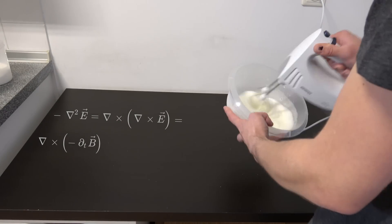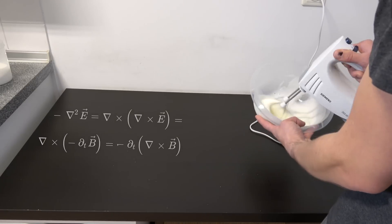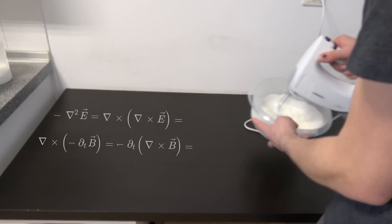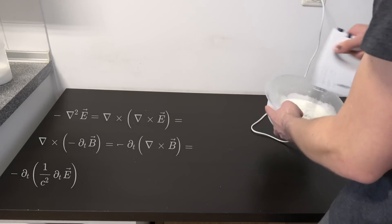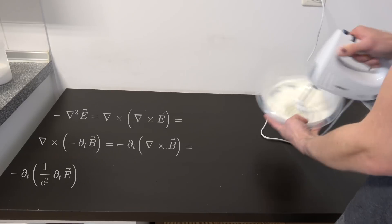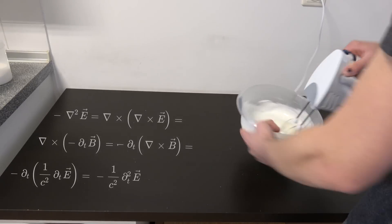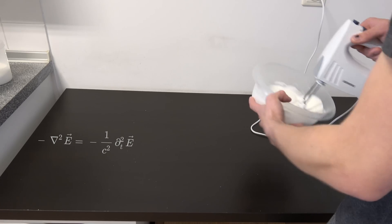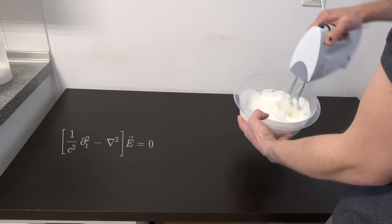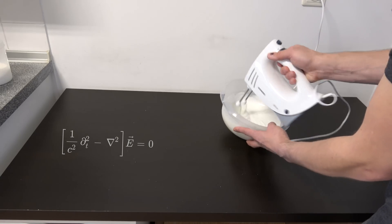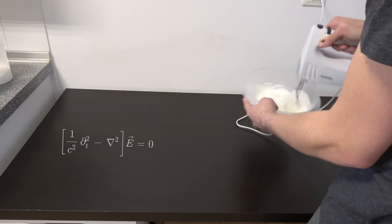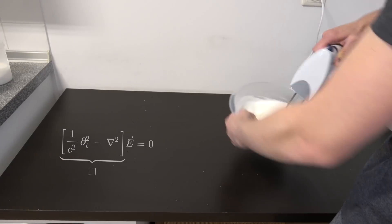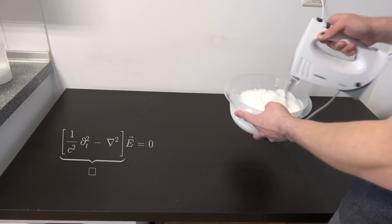We can use the well-known theorem — Schwarz's theorem — to interchange the two differentials, ending up with negative ∂/∂t of the curl of the magnetic field. By Maxwell's equations, that curl of B is nothing but (1/c²) ∂E/∂t. Bringing constants outside and combining the time derivatives, we end up with a second-order partial differential equation. Factoring out E, we get a homogeneous second-order PDE. This weird differential operator — the little square — is called the d'Alembertian, and this is our wave equation.